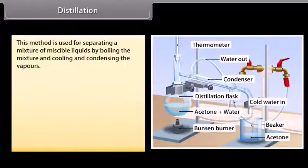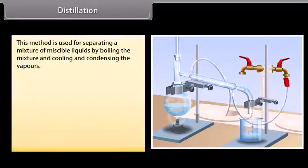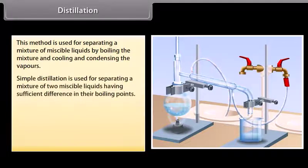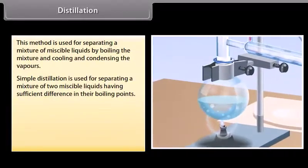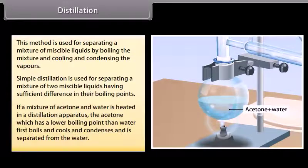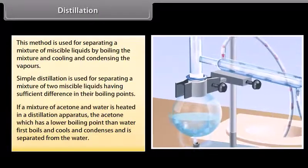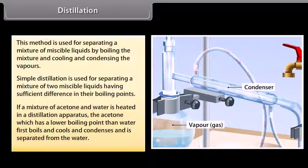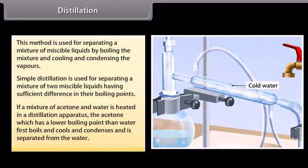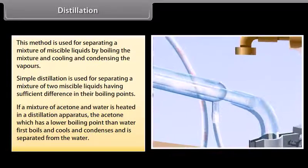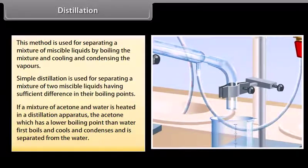This method is used for separating a mixture of miscible liquids by boiling the mixture and cooling and condensing the vapors. If a mixture of acetone and water is heated in a distillation apparatus, the acetone, which has a lower boiling point than water, first boils and cools and condenses and is separated from the water.